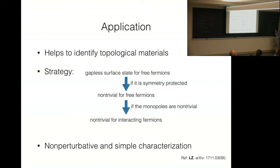So there are many applications, but I will only talk about one particular direction that is to use the ideas here to help identify topological materials. This is our strategy. We start from the gapped free fermion Hamiltonian and examine its surface state. If the surface is gapless, then we ask if this gapless surface is protected by the symmetry. If it is, we know this free fermion system is a non-trivial topological state for free fermions. But at this moment, we do not know if it is also a non-trivial topological state for interacting fermions.